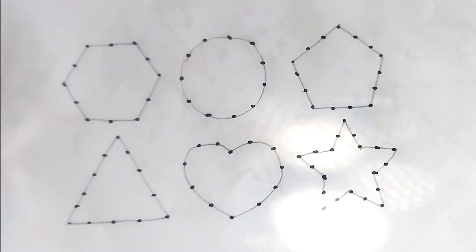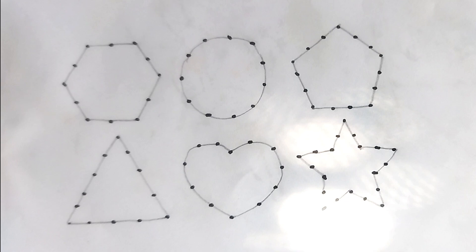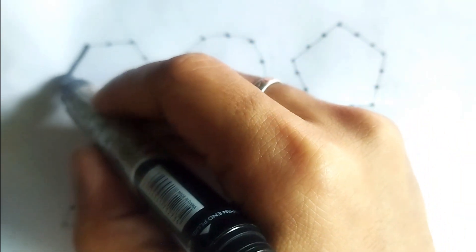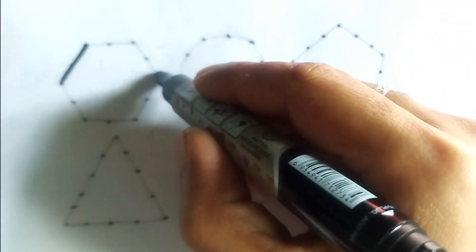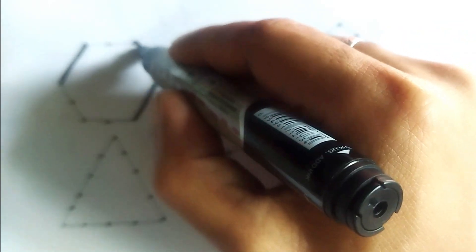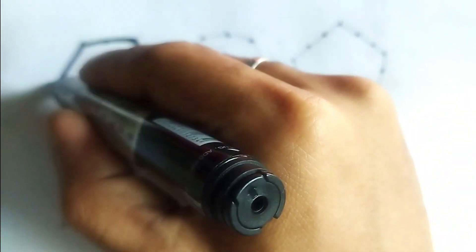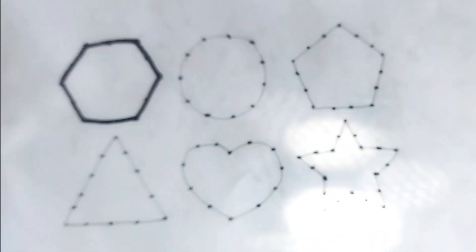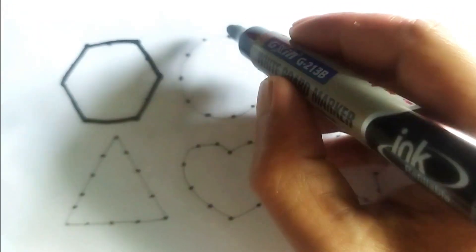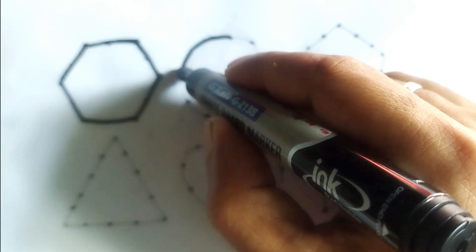Hello kids, how are you today? We will learn different types of shapes and different types of colors. This is a hexagon — one, two, three, four, five, six — hexagon.